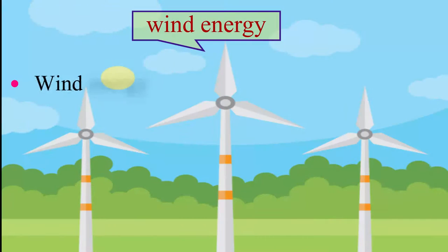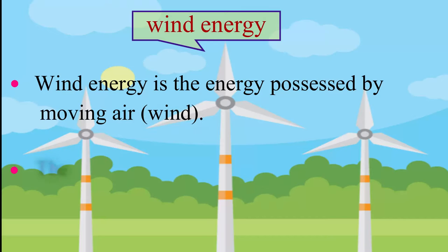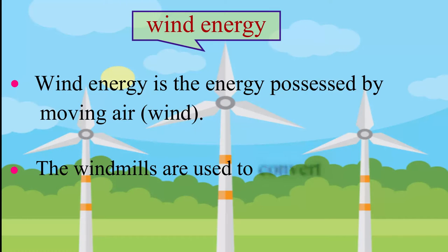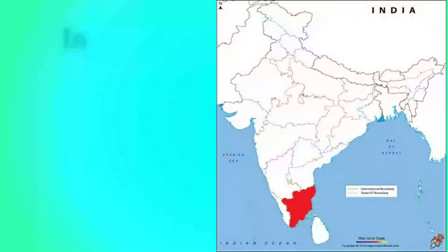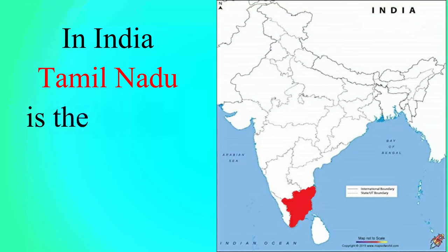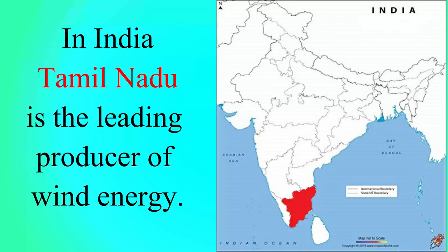Wind energy is the energy possessed by moving air. Windmills are used to convert wind energy to electricity. In India, Tamil Nadu is the leading producer of wind energy.